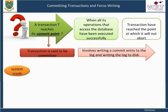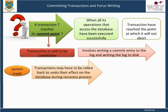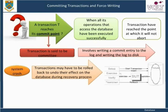At the time of a system crash, we search back in the log for all transactions T that have written a 'start transaction T' entry into the log but have not yet written a 'commit T' entry; these transactions may have to be rolled back to undo their effect on the database during the recovery process. Transactions that have written their 'commit T' entry in the log must also have recorded all their write operations in the log — otherwise they would not be committed — so their effect on the database can be redone from the log entries.